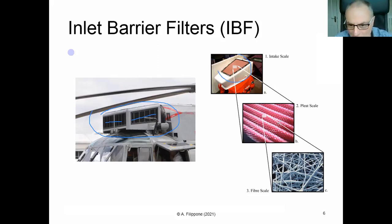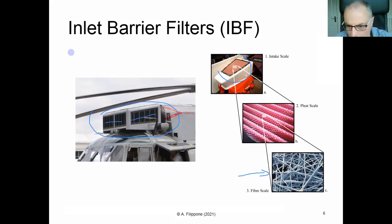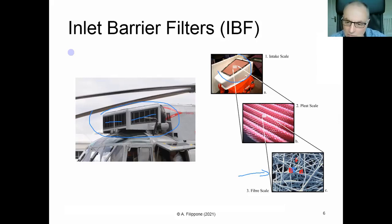If you look closely, what you find is a pleated filter shaped like a V. Zooming in further, you find fibers. The idea is that any particle trying to get in gets stuck. A particle gets stuck here, another gets stuck there, and soon enough, with all these particles stuck on the filter, the filter gets clogged. You end up with a layer of dust in there.